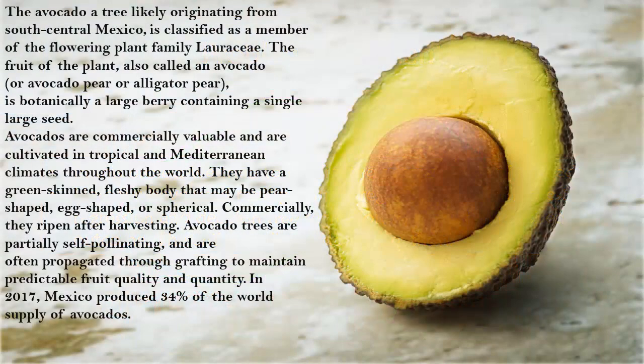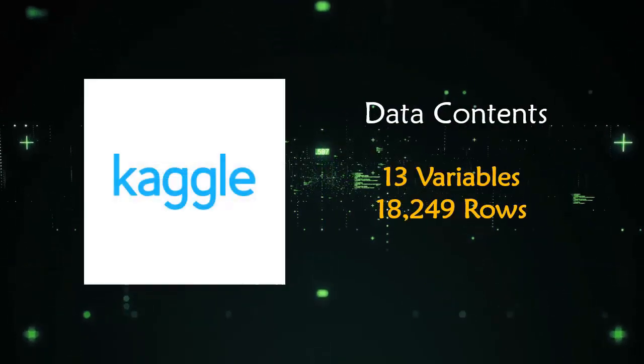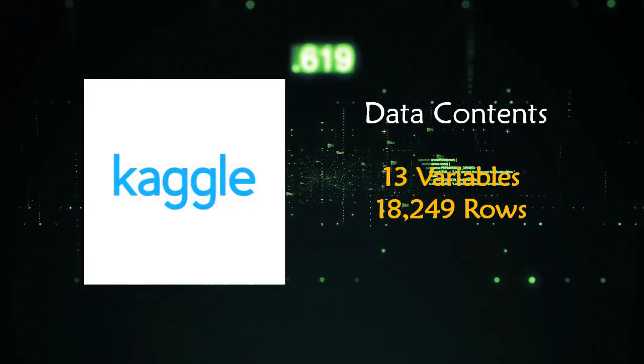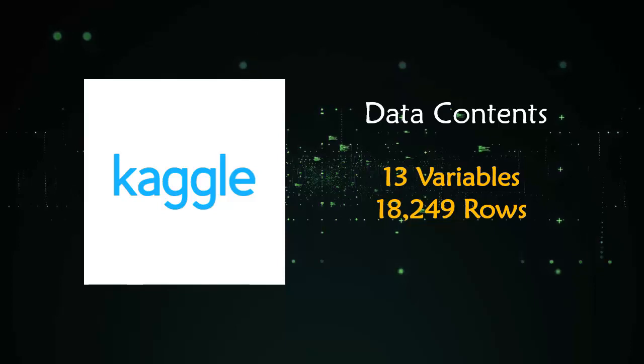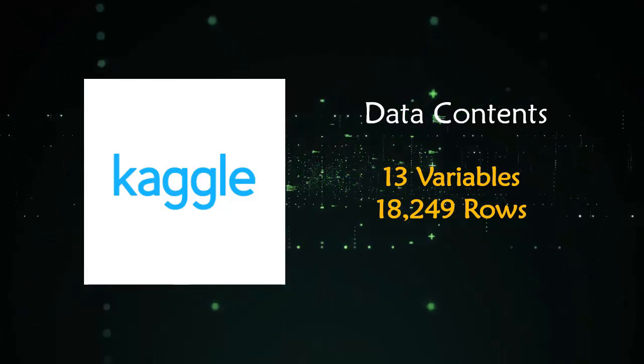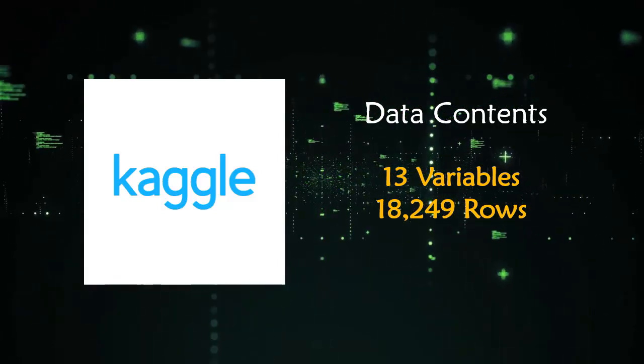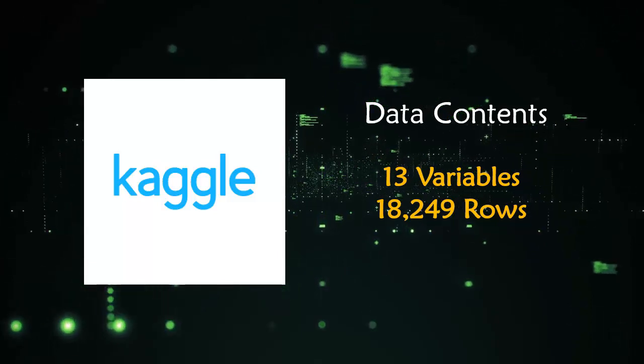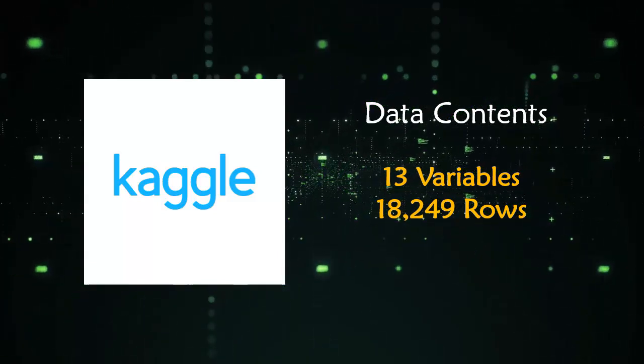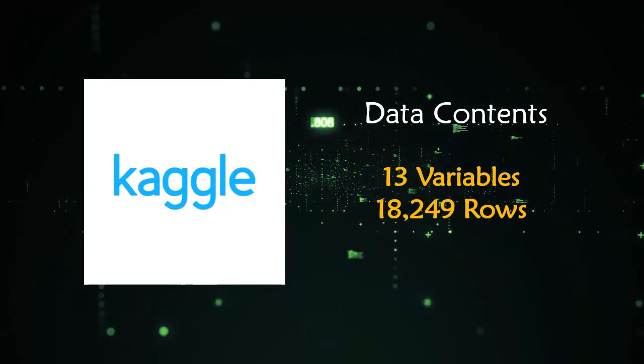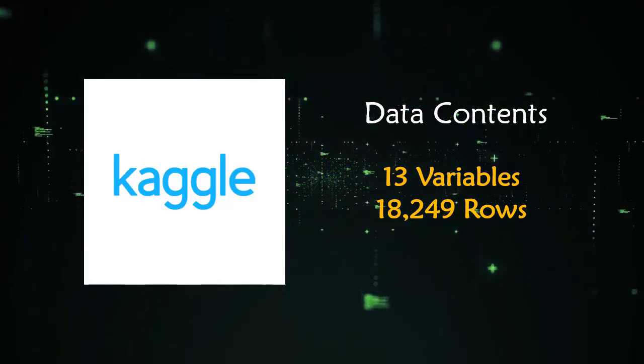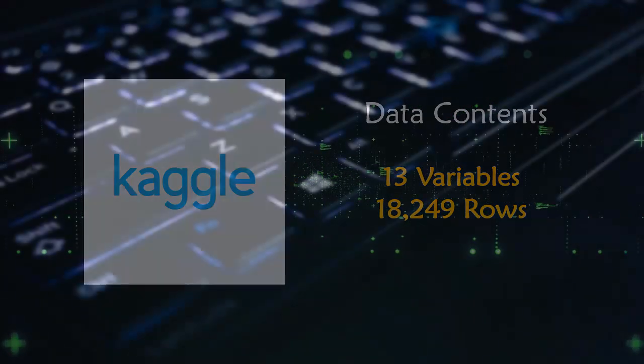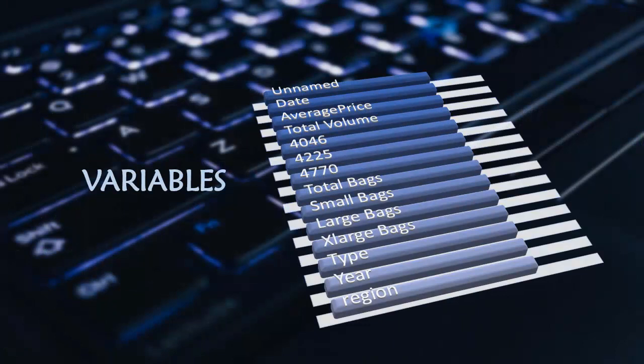Here I have provided a bit of information on avocado. Our data has been taken from Kaggle and our data contains 13 variables and 18,249 rows. As said earlier, our data contains 13 variables.